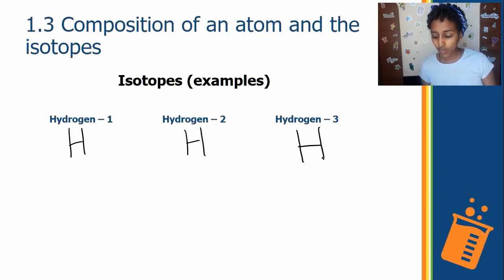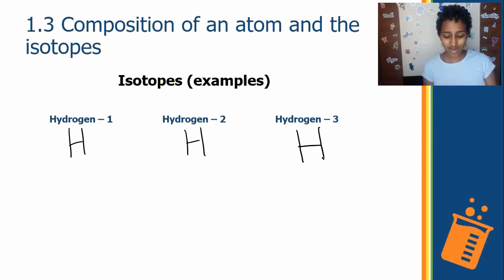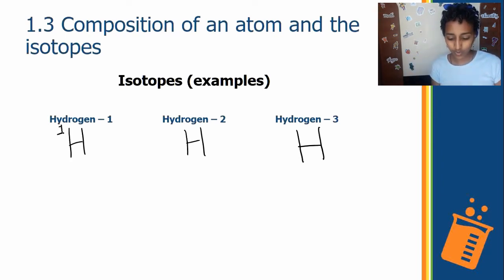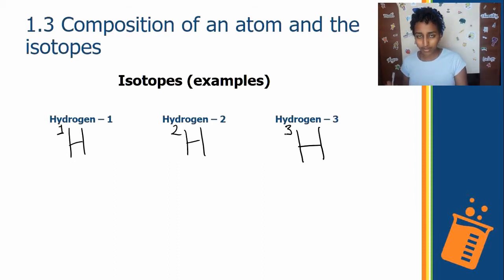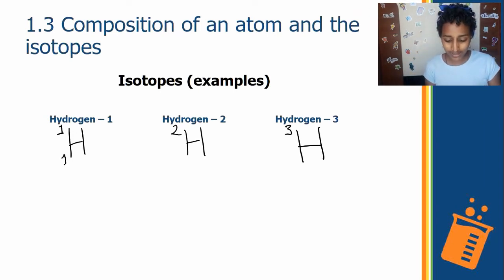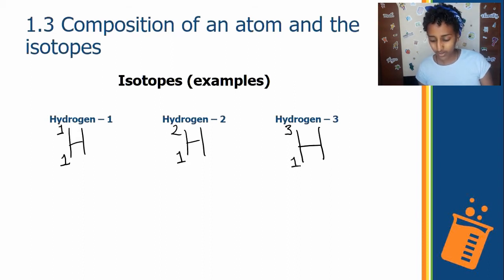You always write the mass number on the top left side — so we write 1, 2, and 3 for hydrogen-1, hydrogen-2, and hydrogen-3 respectively. The atomic number of hydrogen is 1, and we write that at the bottom left corner: 1, 1, 1 for all three.